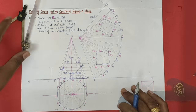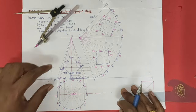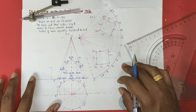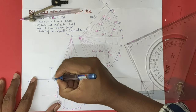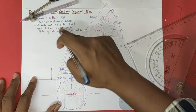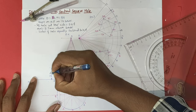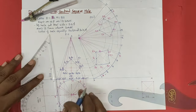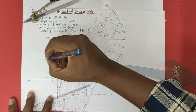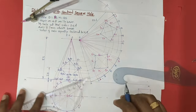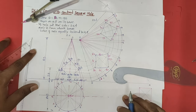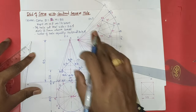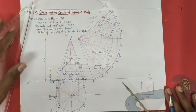Last part is to dimension the important dimensions. The axis of the square hole is 23 mm away, so mark 23 mm. Mark the height of 85 mm, mark the diameter. Draw the arrows correctly. Use only pencil - do not use pen. This completes your DLS of a cone with central square hole. Thank you.